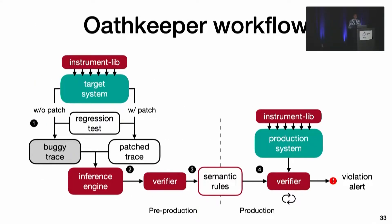The workflow of OathKeeper consists of two phases. In the pre-production phase, it infers semantic rules from past semantic failure regression tests. This is done by instrumenting the target systems and running both buggy and patched versions to emit two sets of traces. The inference engine then automatically extracts highly relevant semantic rules from the two traces. In the runtime phase, OathKeeper continuously checks the system traces against the semantic rules to find violations.